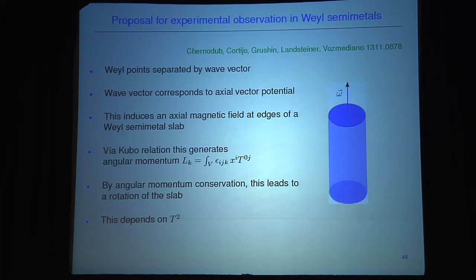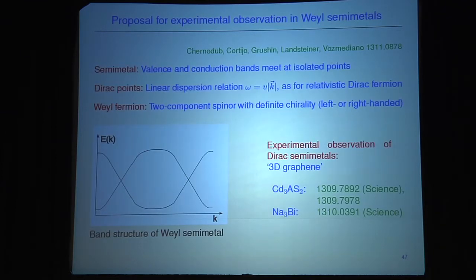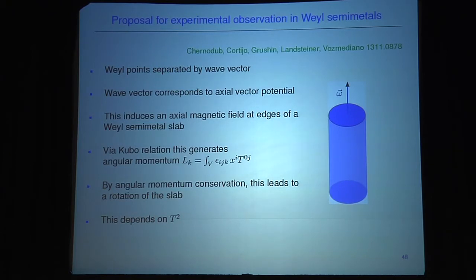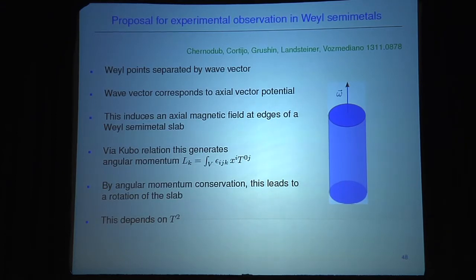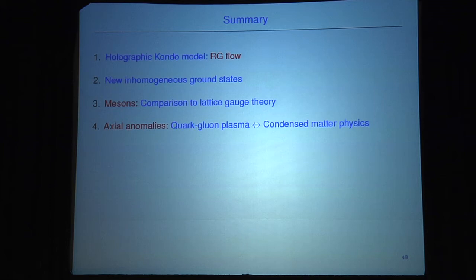There is hope that by doping or considering heterostructures, a Weyl semi-metal might be constructed. The gravitational axial anomaly implies you should see a macroscopic angular momentum in a slab of this Weyl semi-metal. A wave vector separates the two Weyl points, corresponding to an axial vector potential, which induces a magnetic field at the edges of the slab, causing recombination of Weyl points to Dirac points. Via the Kubo relation, this generates angular momentum for the fermions, and by angular momentum conservation this should also lead to a rotation of the slab. This whole effect depends on temperature, so you should see the angular momentum change with temperature — a very interesting experimental proposal.